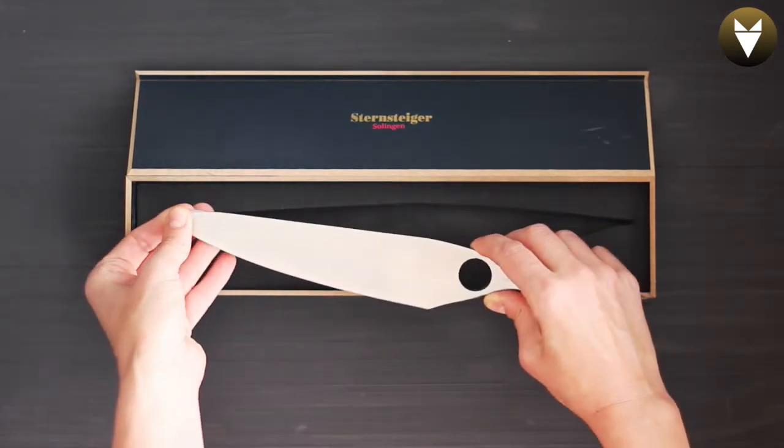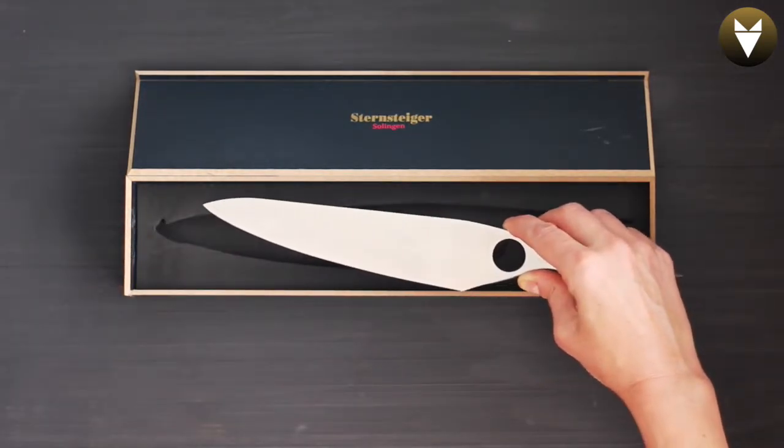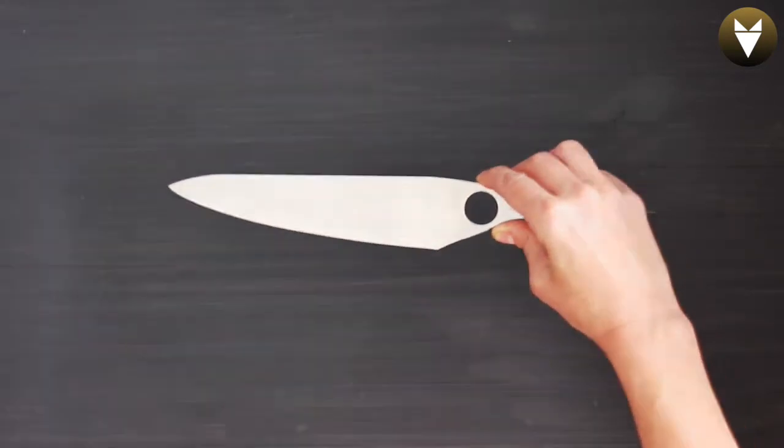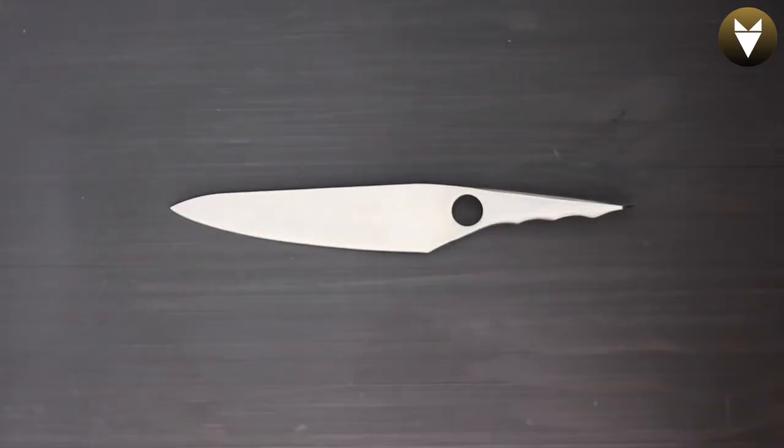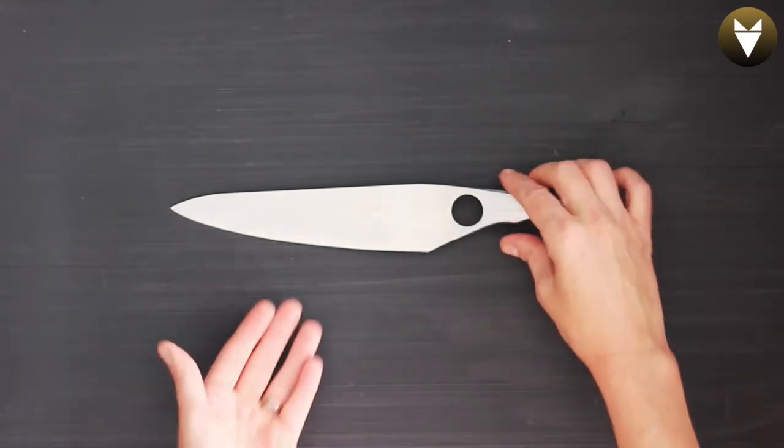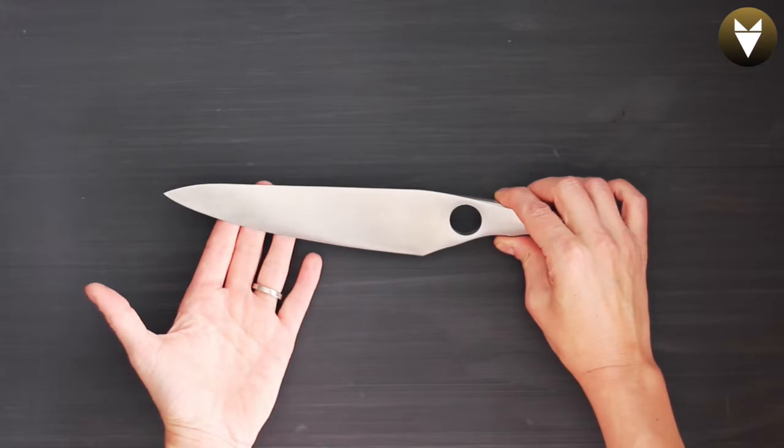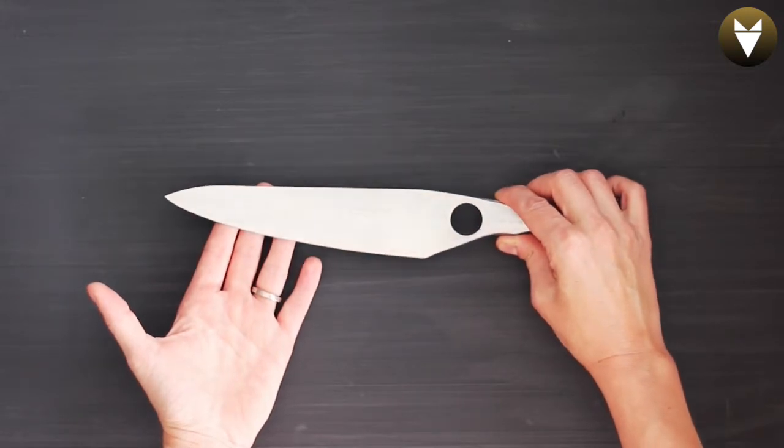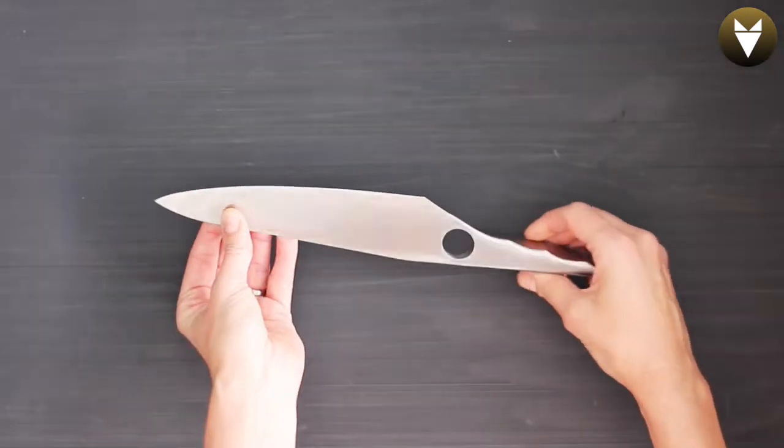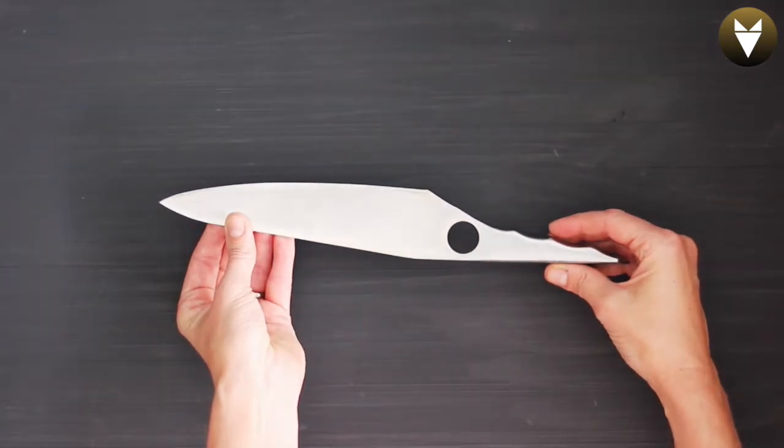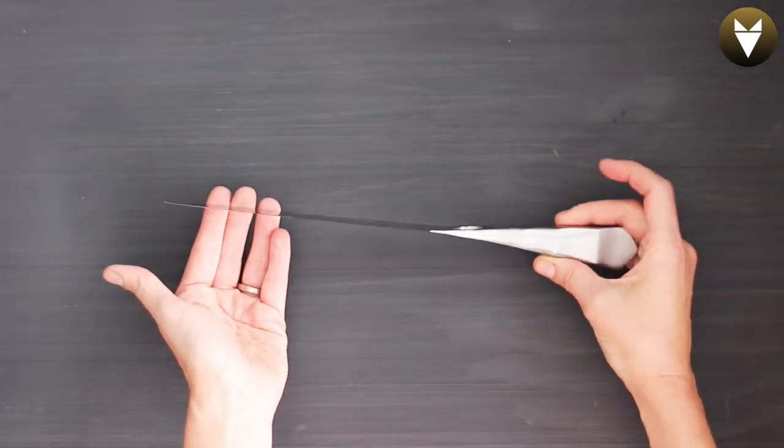So as you can see, this knife has a very unique and elegant look. It was forged from a single solid piece of German stainless steel. This is a 20 centimeter blade length knife and it weighs about 330 grams. It's nano coated for enhanced durability.